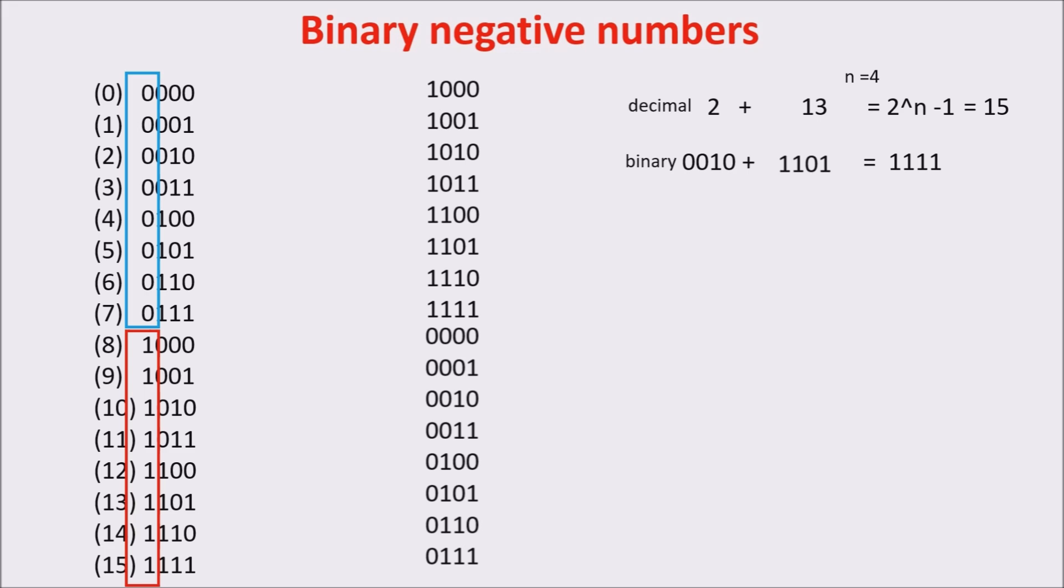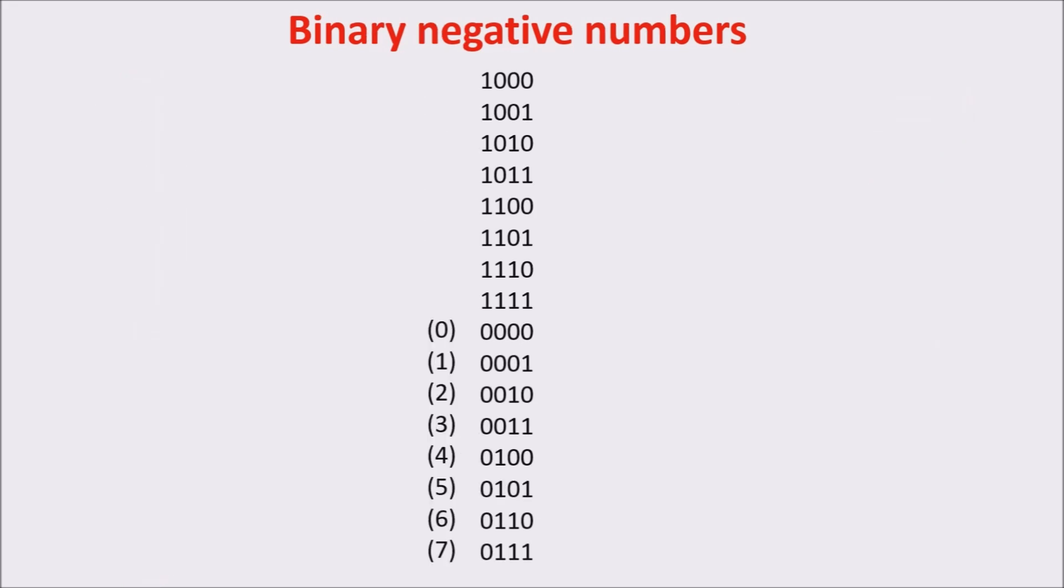Now, we arrive to the second complement. The second complement of a number, for example 2, is the number which, summed to 2, gives 2 at the power of n. So it is the first complement plus 1. So in order to calculate the second complement of a number, I must invert the number bits and add 1.